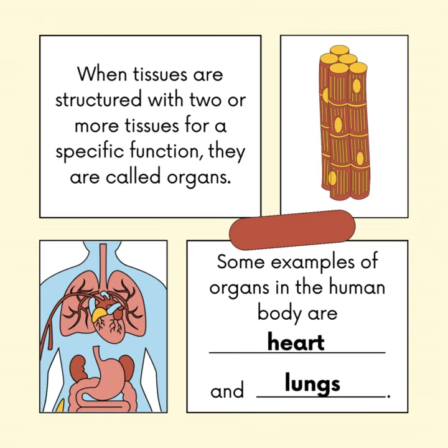When tissues are structured with two or more tissues for a specific function, they are called organs. Some examples of organs in the human body are heart and lungs.